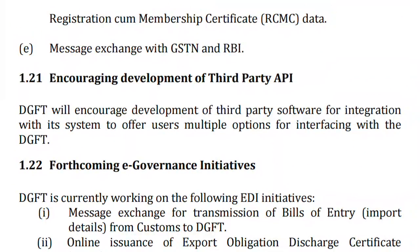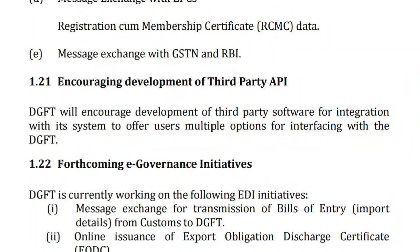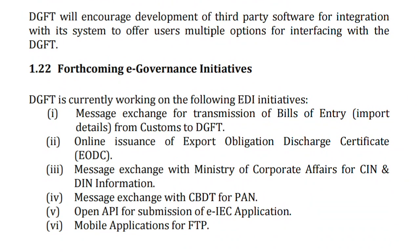Third parties include custom house agents, freight forwarders, and banks which are integrated with the EDIs. DGFT encourages these third parties by informing them that they can file data online and their data will be transmitted online to the DGFT server. They can interact and check their data anytime. This type of facility is provided by the DGFT, also digitally. Paragraph 2.4 covers forthcoming e-government initiatives.